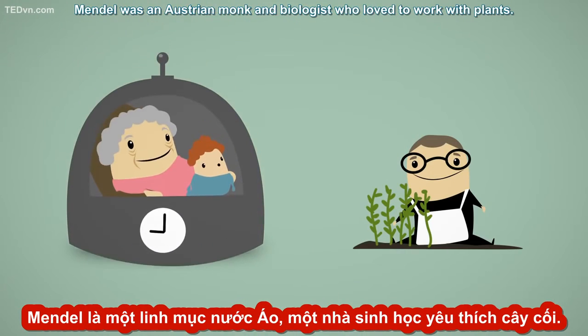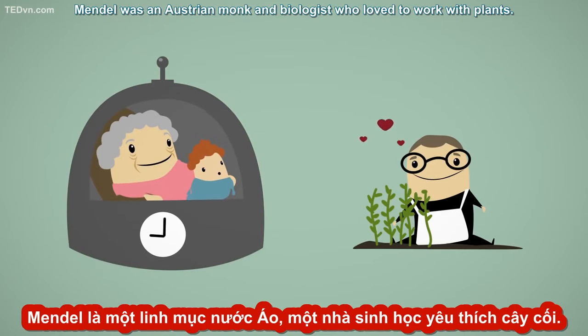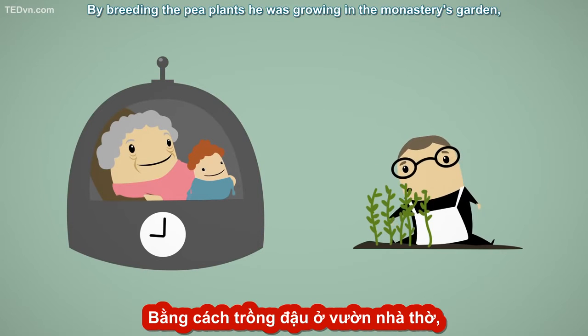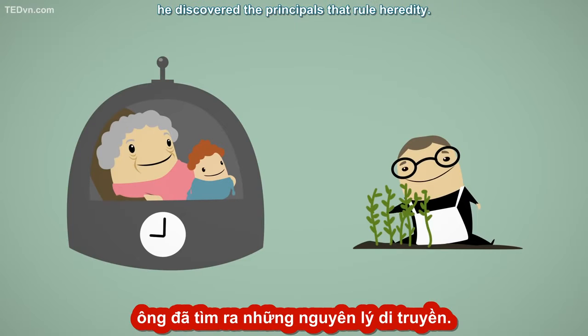Mendel was an Austrian monk and biologist who loved to work with plants. By breeding the pea plants he was growing in the monastery's garden, he discovered the principles that rule heredity.